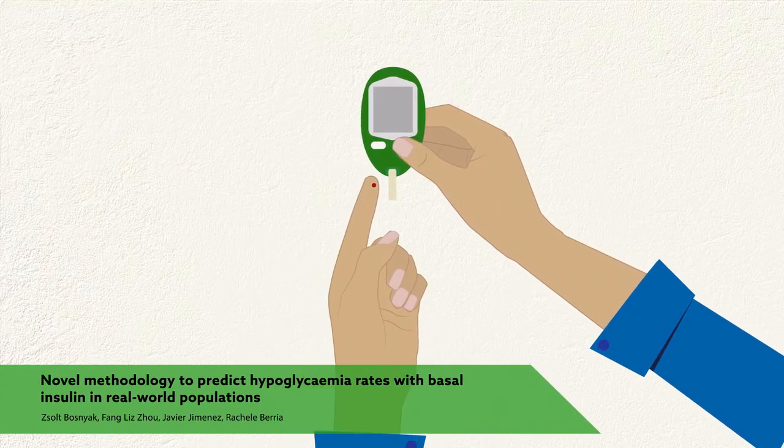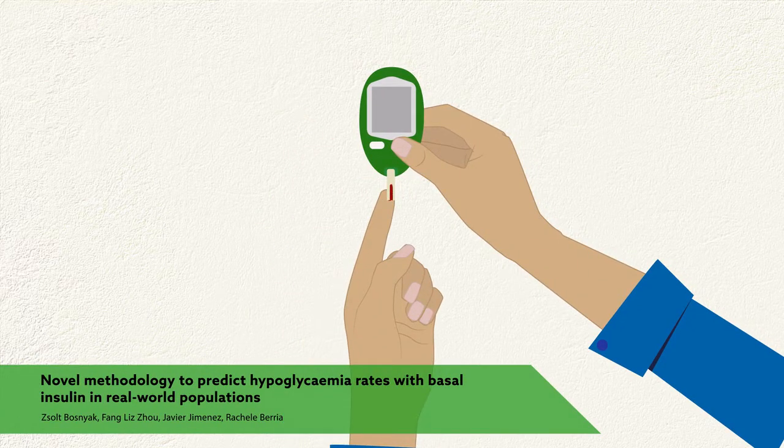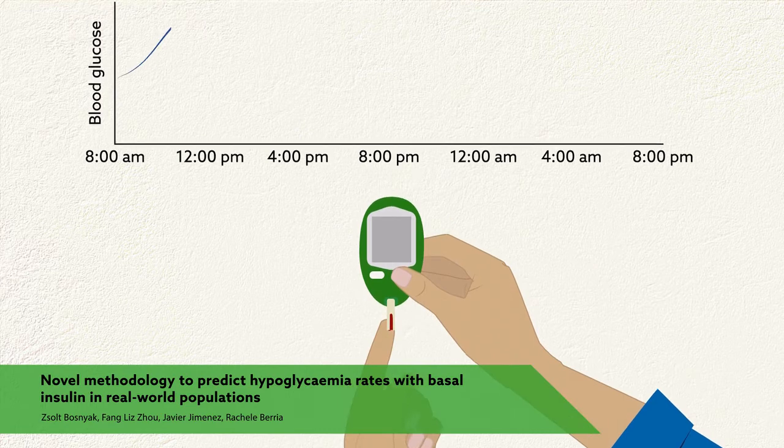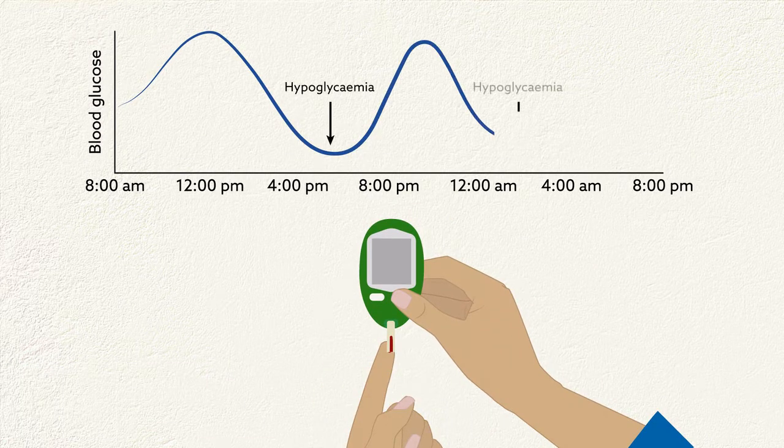People with diabetes who require basal insulin to achieve blood glucose control can be at risk of hypoglycemia, where blood glucose levels drop too low.